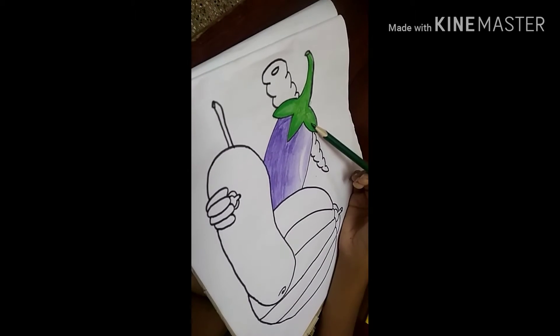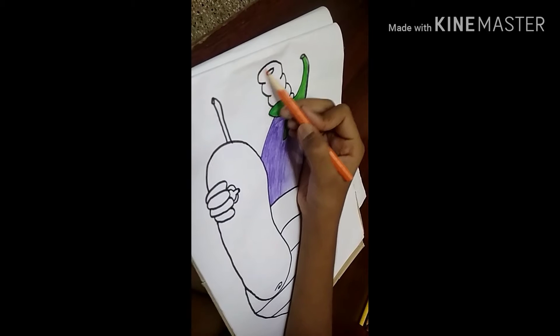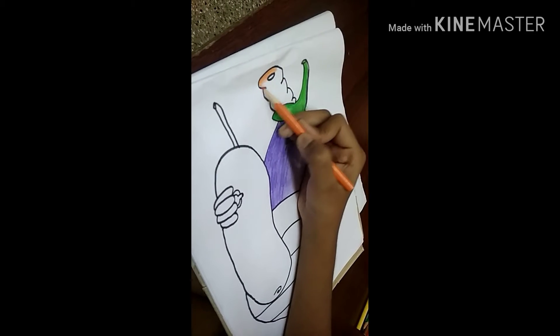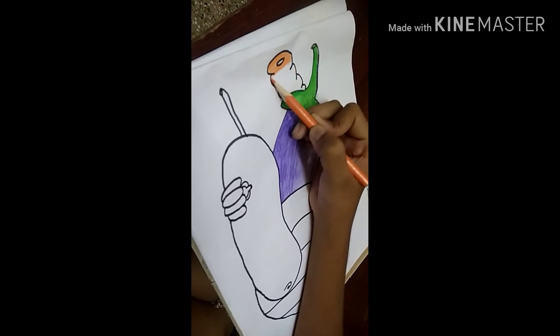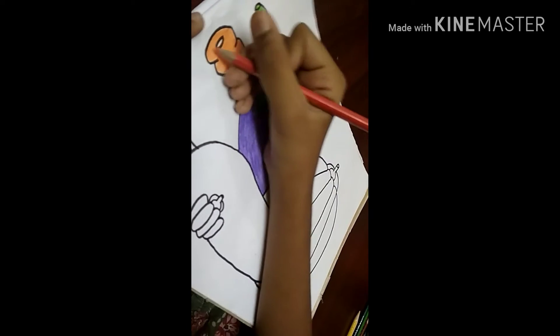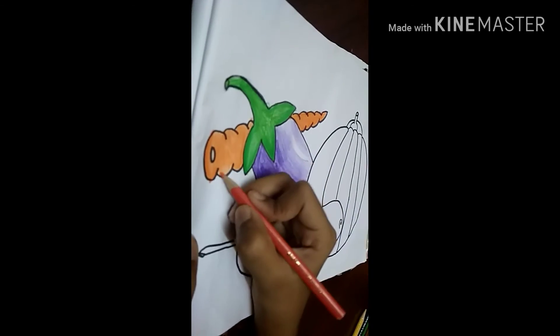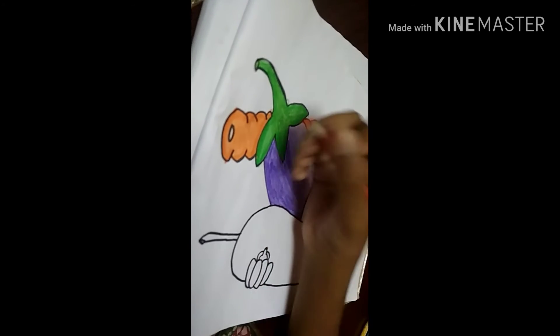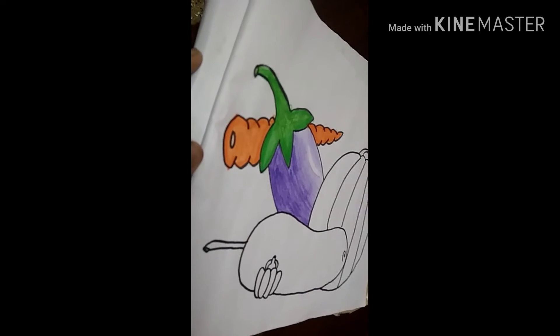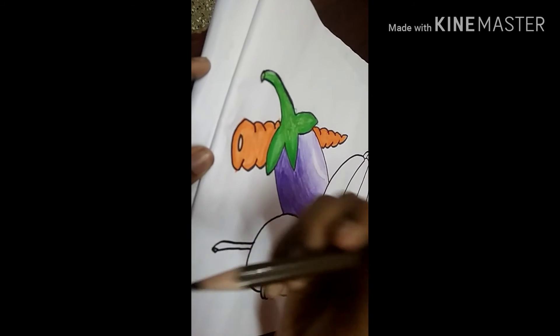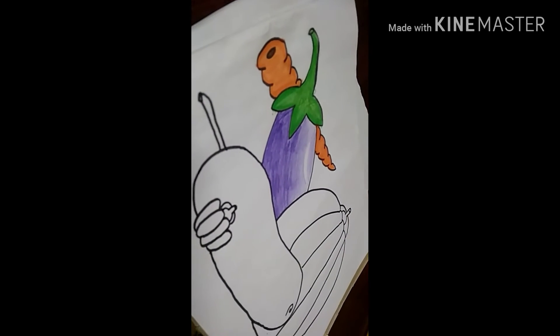Now our brinjal is ready. Let's do coloring for carrot. First fully color with light orange, then shade with dark orange at all the corners. Give little stripes at the middle and color with dark brown. Yeah, our carrot is ready. Hope you all enjoy carrots.